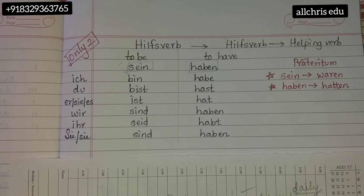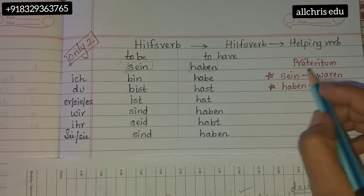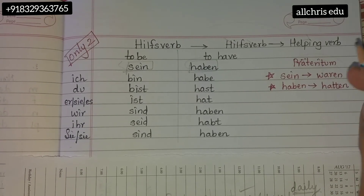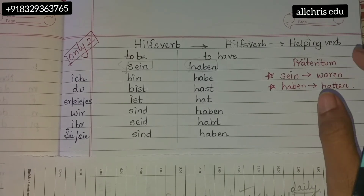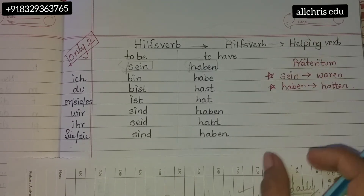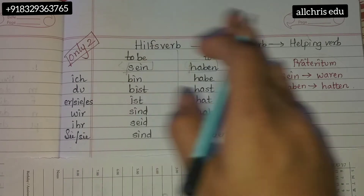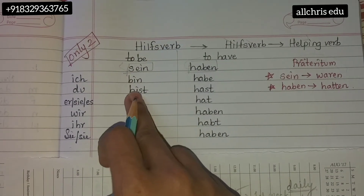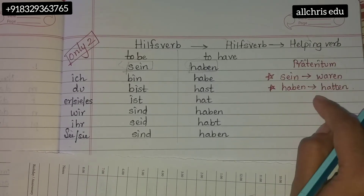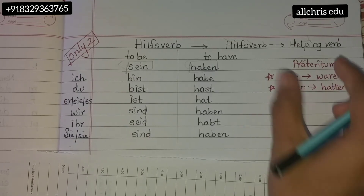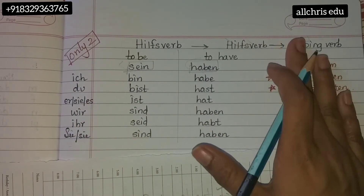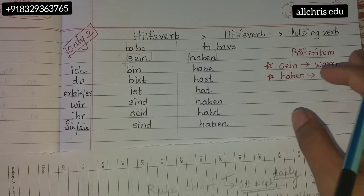If you have learned the past tense of sein and haben, you can make two more columns. The past tense of sein is war/waren, and the past tense of haben is hatte/hatten — the 'war' conjugation and 'hatte' conjugation. So actually only two verbs are there and this part is the past tense of those verbs.